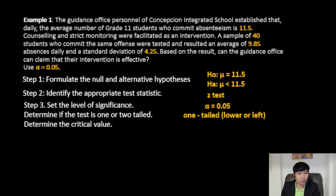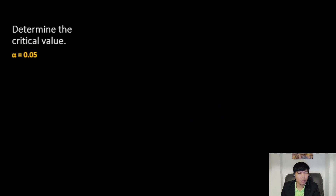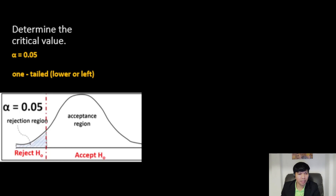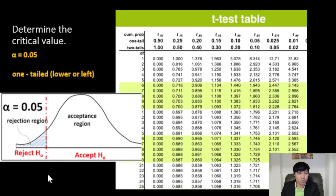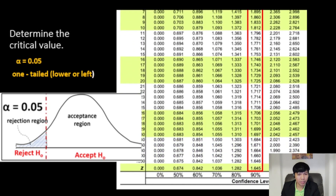Next, we determine the critical value, then calculate the test statistic, and apply the decision rule. To determine the critical value, alpha is 0.05 and it's a one-tailed test. On the normal curve, the rejection region is on the left side. From the Z-table, scrolling down to Z for a one-tailed test at 0.05, we get 1.645. Since it's a left-tailed test, the critical value is negative 1.645 — it's always negative for a left-tailed test.